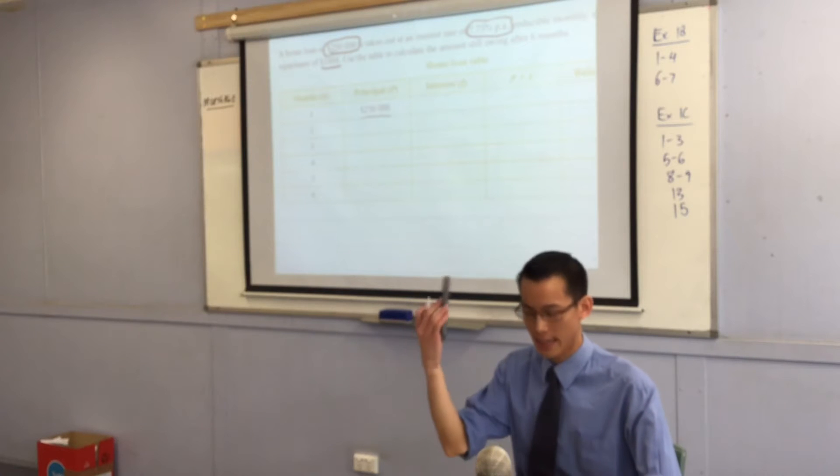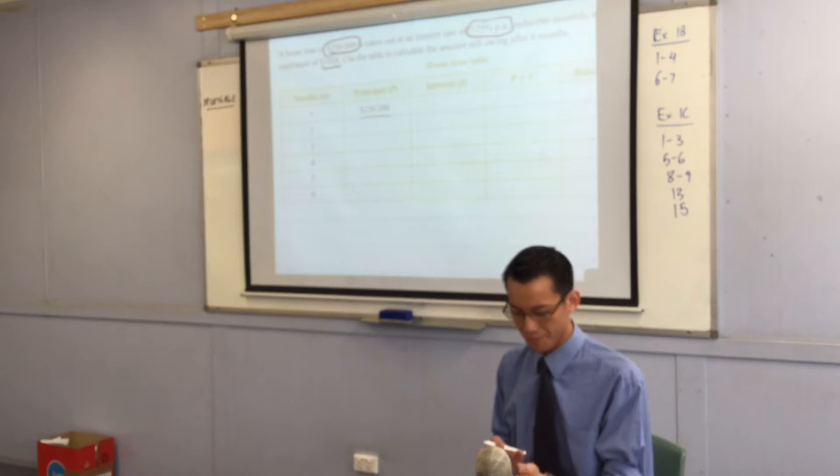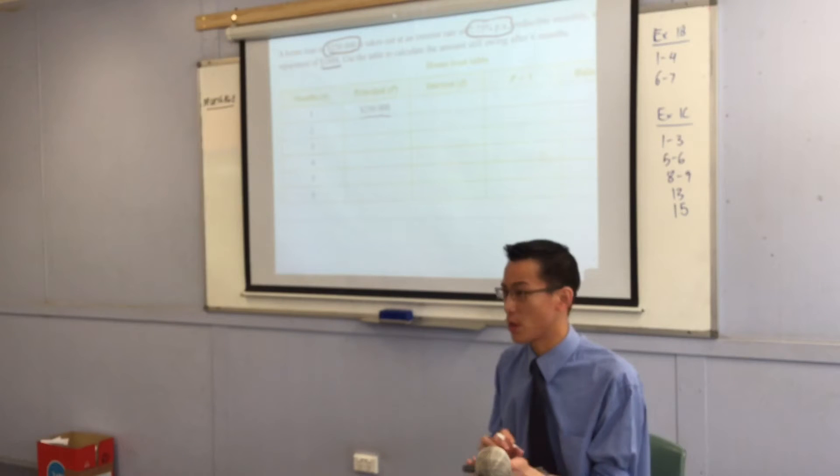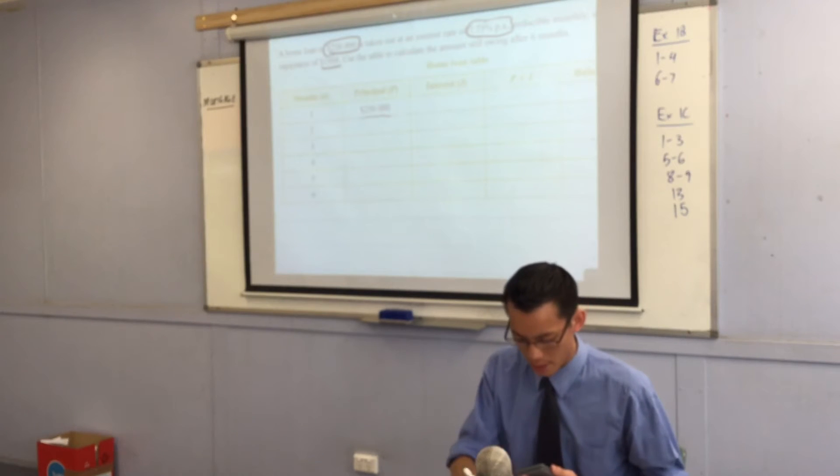So with your calculator there, you can say that the interest will be $250,000 times, what's the rate? What's the rate? It's 7.75. So I'm going to write in my calculator, this is $250,000 times 0.0775.